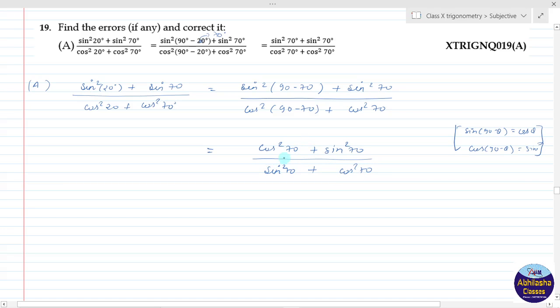So using the identity sin squared theta plus cos squared theta equals one, both numerator and denominator equal one. So this is the answer.